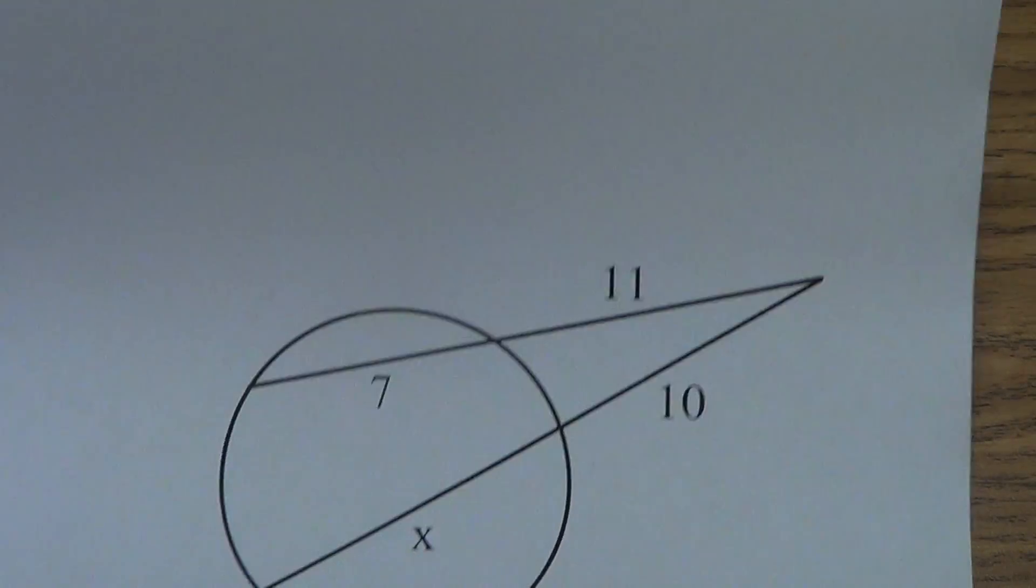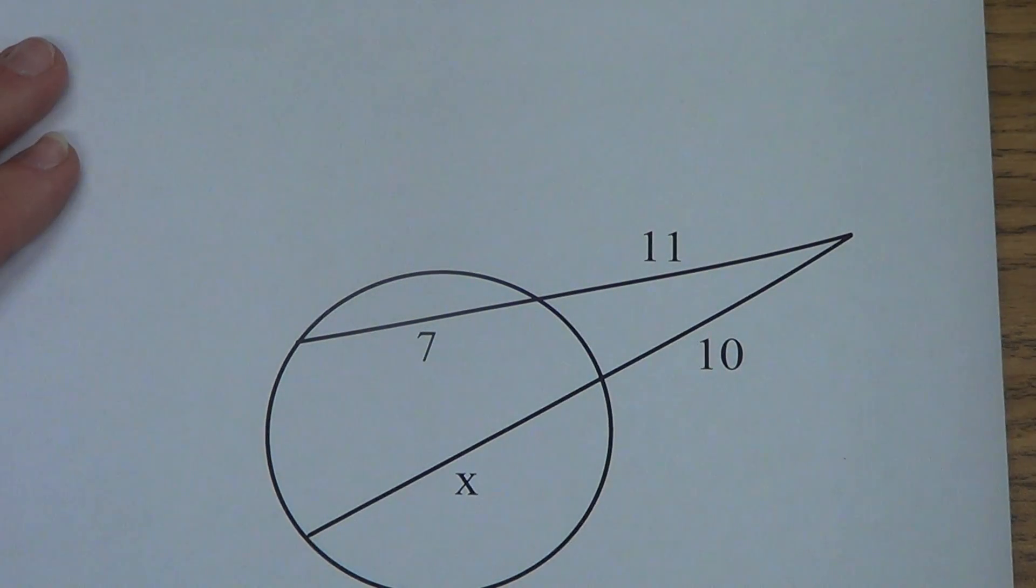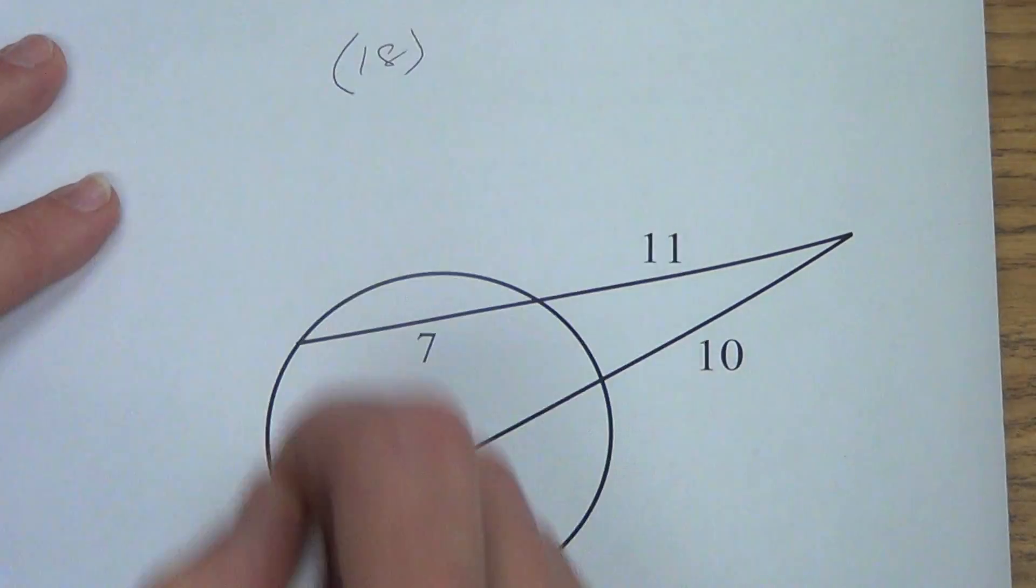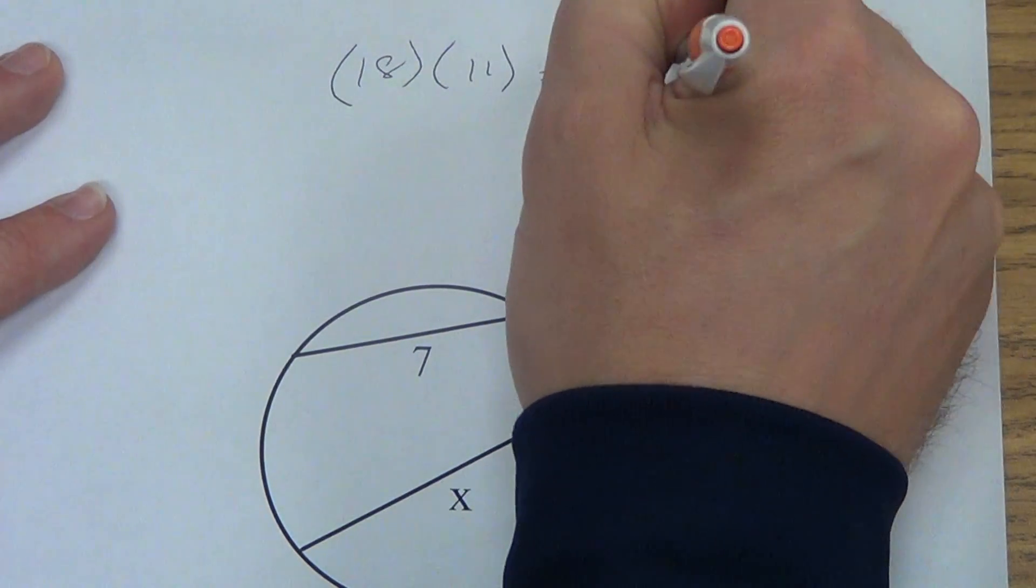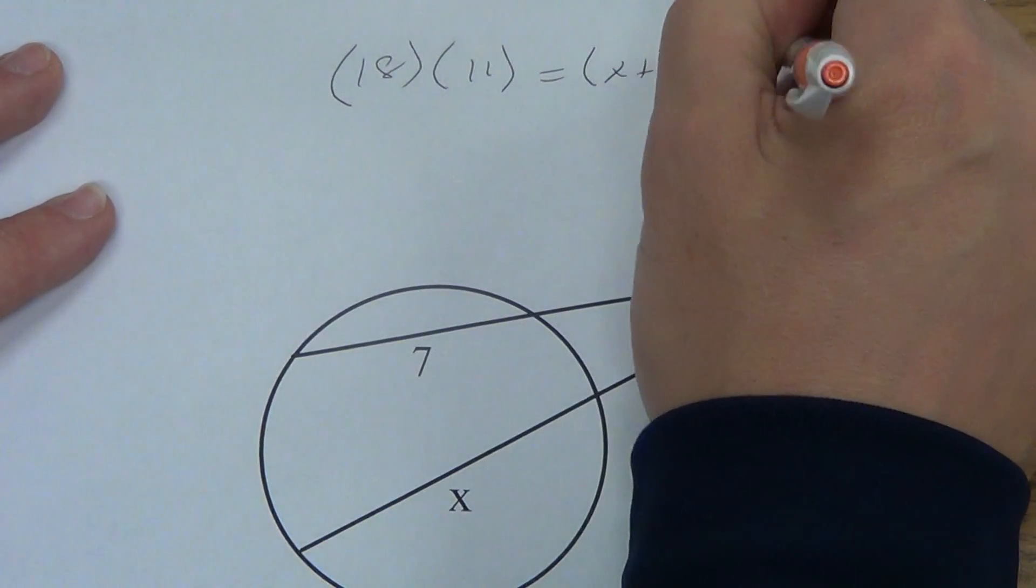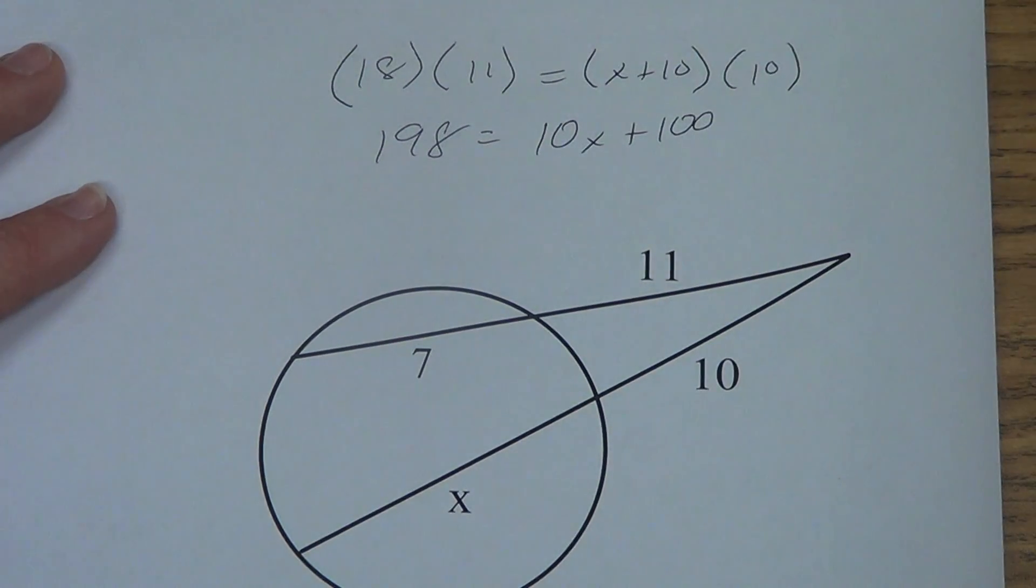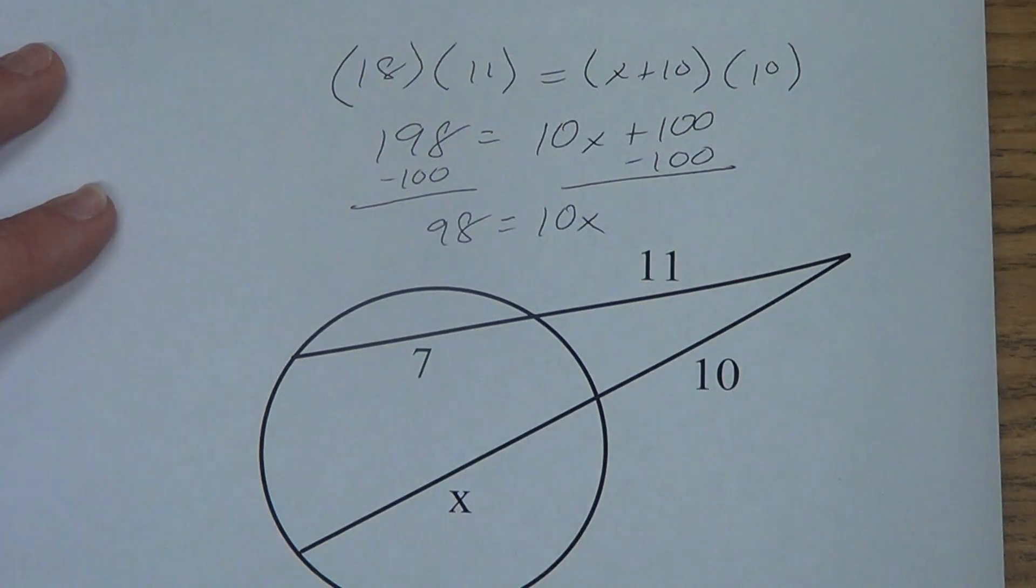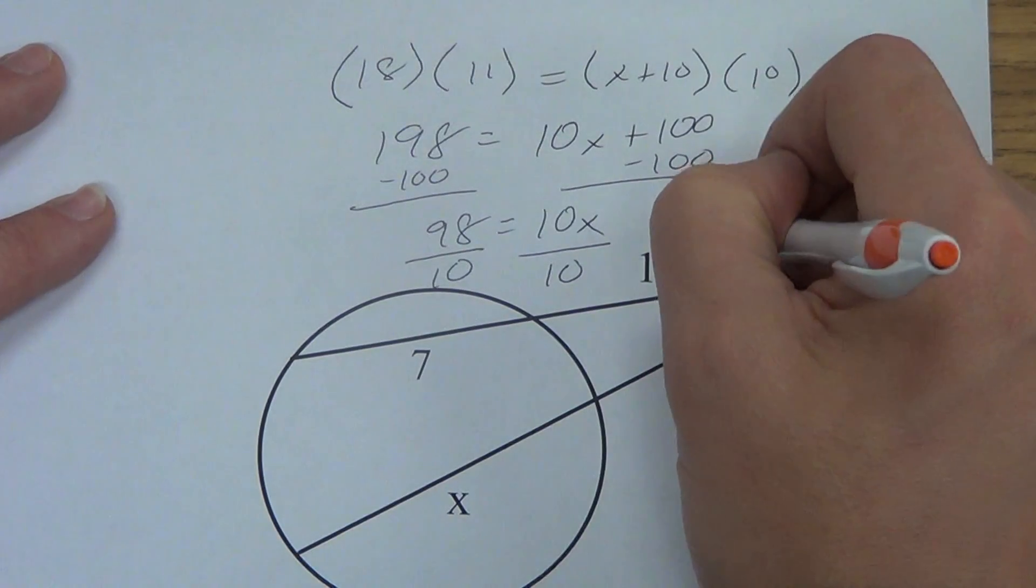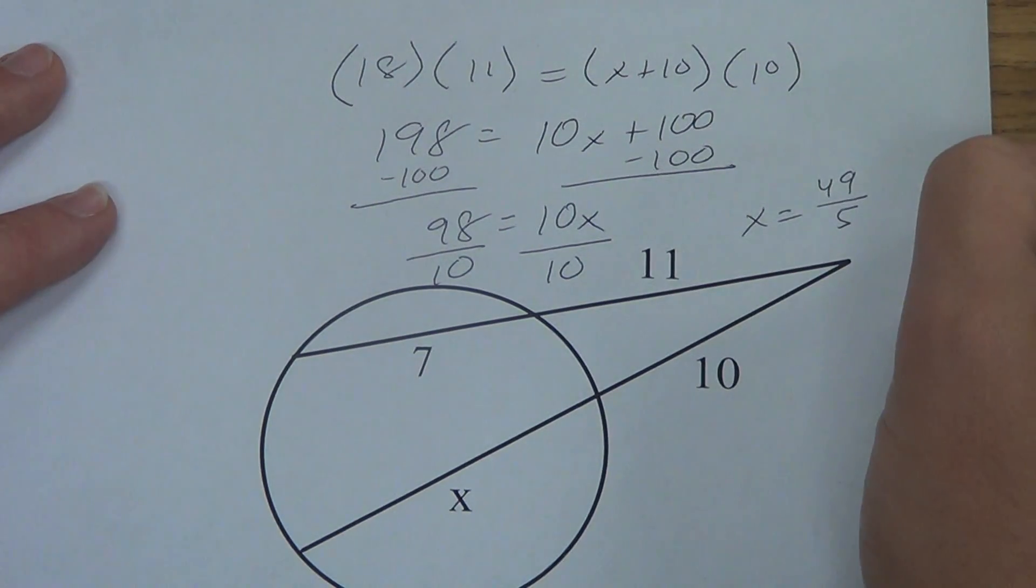All right, next one. Same idea. WSS times ESS equals WSS times ESS. So, whole secant segment is 18. Times the external part is 11. Equals the whole thing, x plus 10. Times the external part, which is 10. 198 equals 10x plus 100. We subtract the 100. 98 equals 10x. We divide by 10. 49 over 5 if we just divide them both by 2 units.